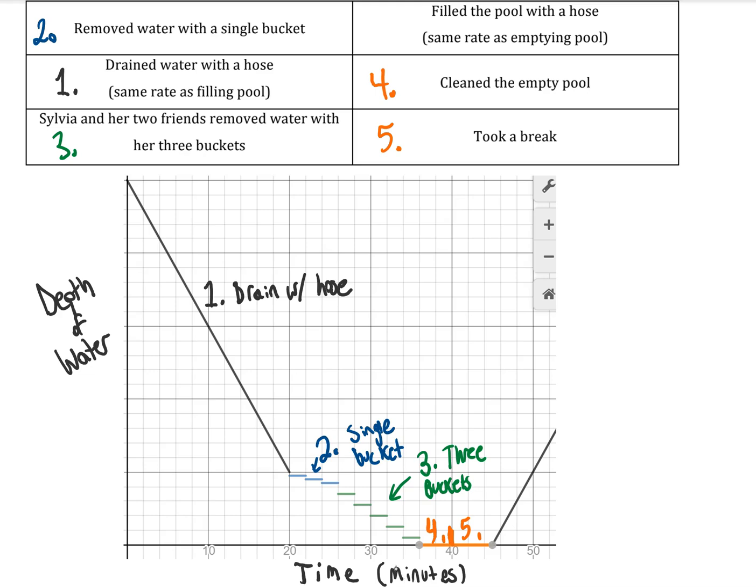And then so that leaves finally part six. The pool is getting filled with a hose. And, of course, it would have to keep going until we got back up to the same height as what we started, because the pool is being refilled to the same height as it started. But I just ran out of space on my graph, so I can draw that little arrow to indicate that.